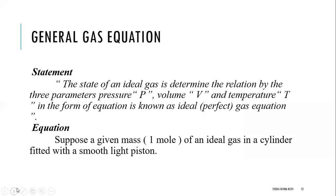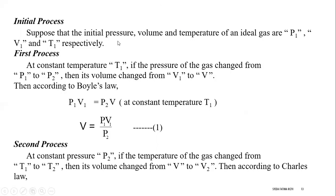Now the general gas equation, also called the ideal gas equation or perfect gas equation. It uses the parameters volume, pressure, and temperature. The general gas equation is derived by combining Boyle's Law and Charles' Law — some also include Avogadro's Law. For one mole of gas we start with initial state P1, V1, T1 and apply both Boyle's Law and Charles' Law together.